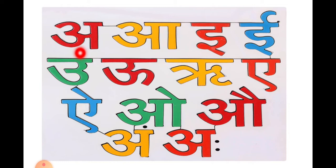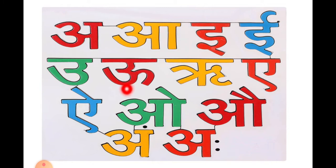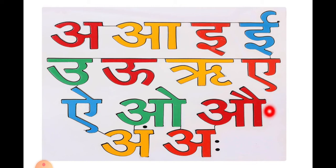So we will see: अ, आ — आ से आम। इ, ई — ई से ईख। उ, ऊ — ऊ से ऊन। ऋ — ऋ से ऋषि। ए, ऐ। ओ, औ — औ से औरत। अं — अं से अंगूर। अः — यह विसर्ग है, इससे कोई शब्द नहीं है। This is just a विसर्ग. ठीक है?